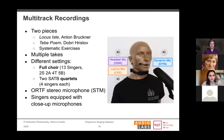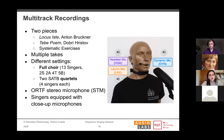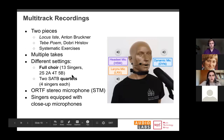We rehearsed and recorded two different songs: Locus Iste and Tebe Poem. We also recorded some systematic exercises including scales, intonation exercises, and cadences. The dataset includes these three different pieces. For each, we recorded multiple takes — at least two takes per song and a maximum of seven takes for the song with more recordings.